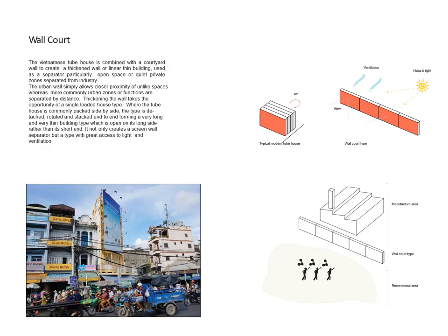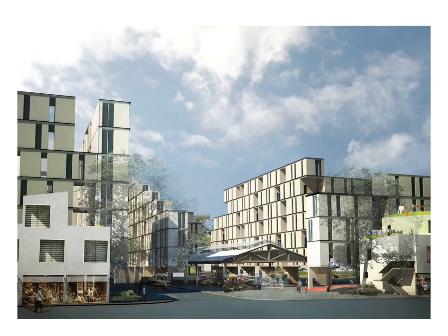The first proposition model is the Wall Court, based on the typical modern tube house. Instead of having houses side by side, this typology rotates and stacks the house at each end. This allows the longer side to be exposed to air and ventilation, and forms a very thick wall that separates two functions in the urban context that are unlikely to be next to each other — for example, an open space like a park and an industrial area. It creates a sense of perforation between the two very different spaces.